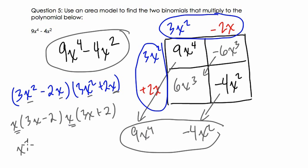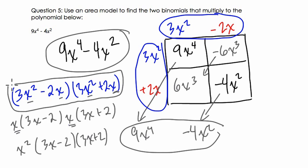We would ultimately get this for an answer. x squared times 3x minus 2 times 3x plus 2. And that could be our answer as well. But since they asked for binomials, let's stop here at this step. Thanks.